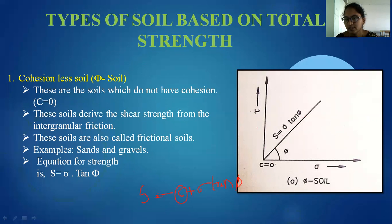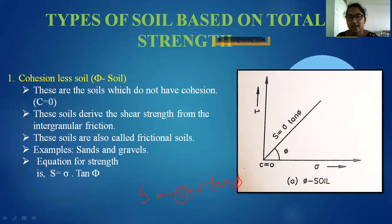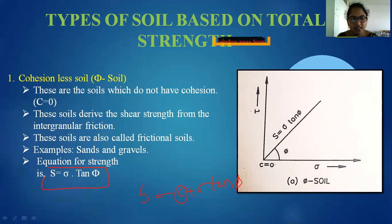The graph is drawn between normal stress and shear stress. Soils which do not have cohesion — cohesionless soils, such as sand — derive their shear strength from intergranular friction. In this equation, S is equal to sigma tan φ. Examples of cohesionless soils are sands and gravels, and these soils are also called frictional soils.